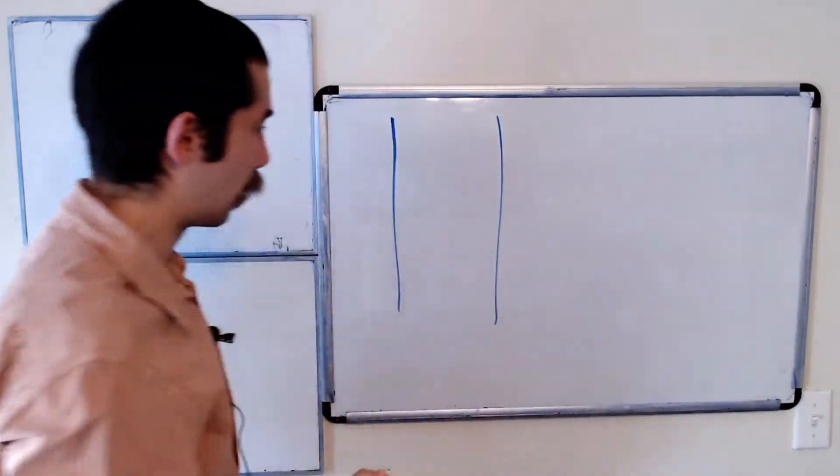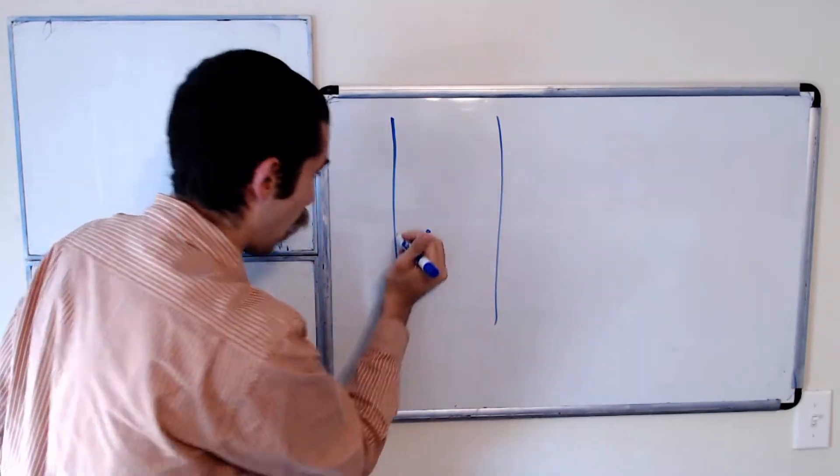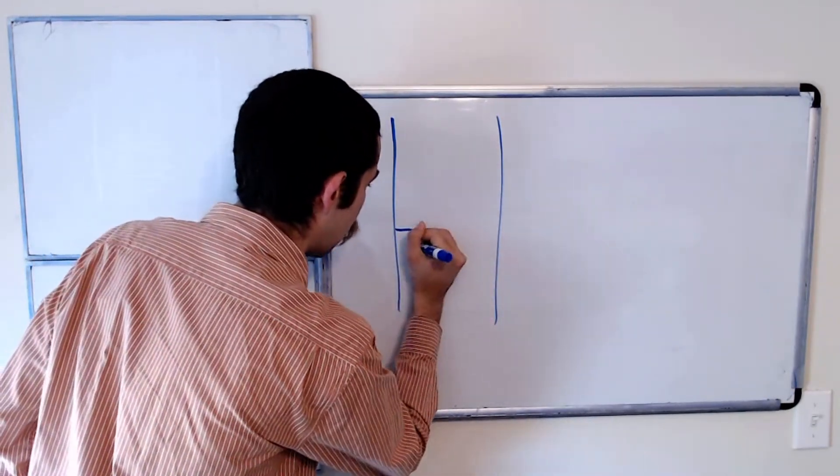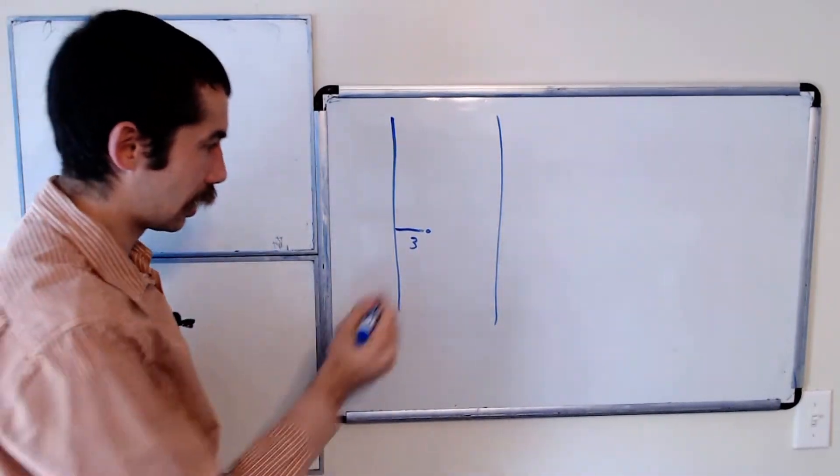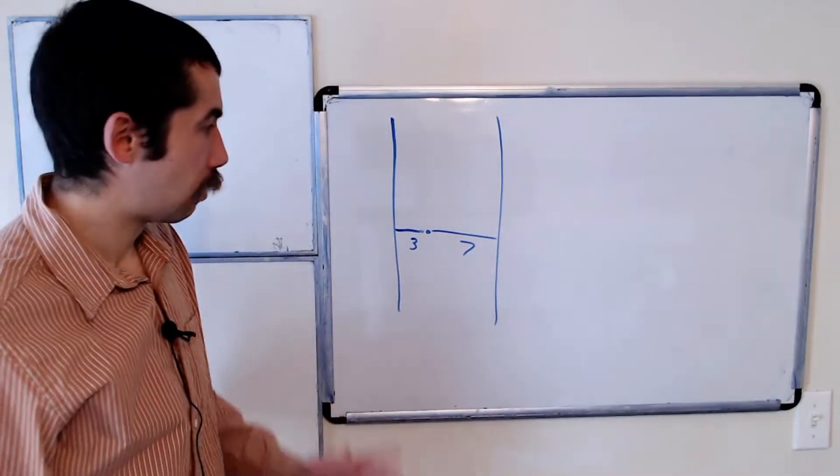Okay, so these are parallel lines and suppose you have a point between the lines that has a distance of three from one of the parallel lines and a distance of seven from the other.